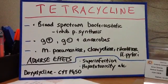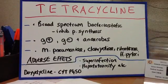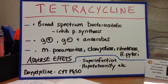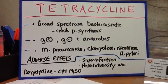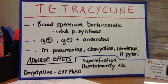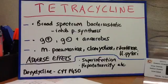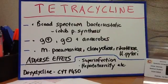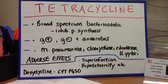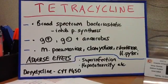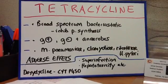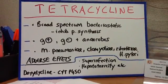Examples of where tetracycline can be used would be, for example, mycoplasma pneumoniae, where it doesn't have a cell wall, so you couldn't use drugs that target the cell wall, so tetracyclines would work here. Also chlamydia, rickettsiae, and even Helicobacter pylori.